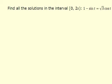In this problem, I'm asked to find the solutions in the interval from 0 to 2π for 1 minus sine t is equal to the square root of 3 cosine t.